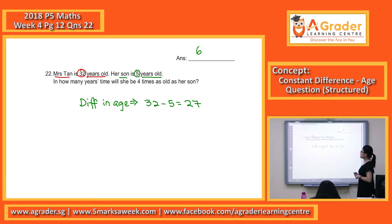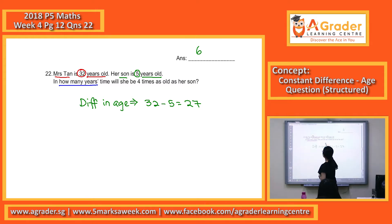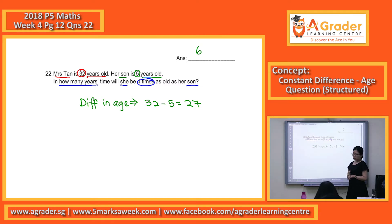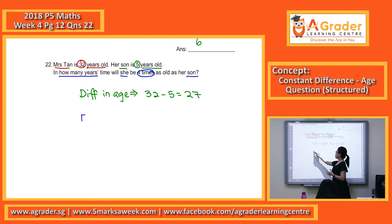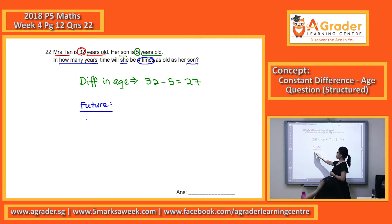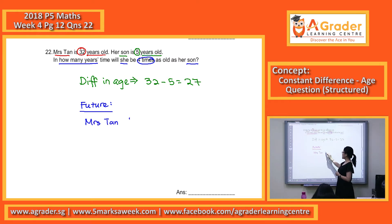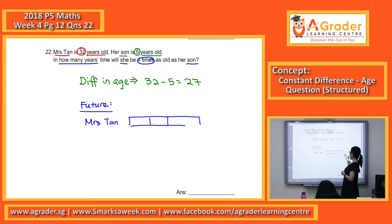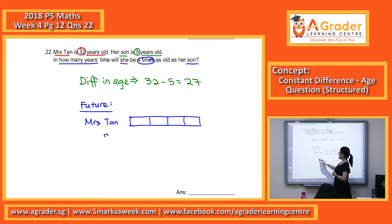The question now asks: in how many years time will she be 4 times as old as the son? So we are talking about the future. Mrs. Pan will be 4 units, whereas the son will only be 1 unit.